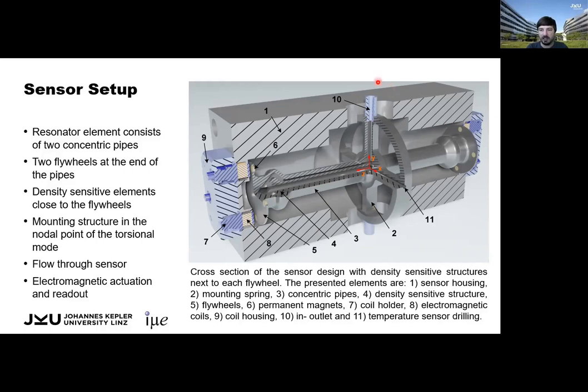The sensor is designed as a through-flow sensor. The fluid flows in through inlet 10, then in the space between the two pipes on the left side, through the inner pipe on the right side, then again in the space between the pipes back to the middle and out of the outlet.